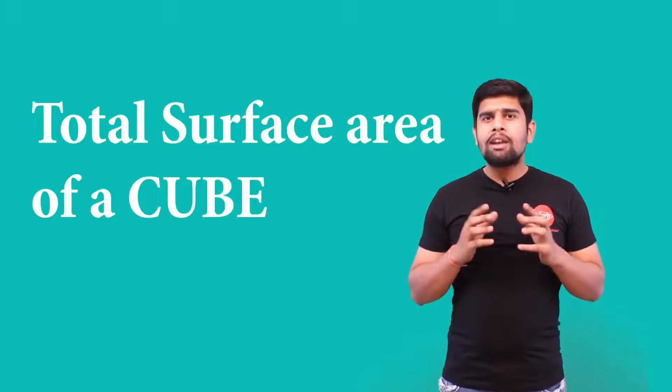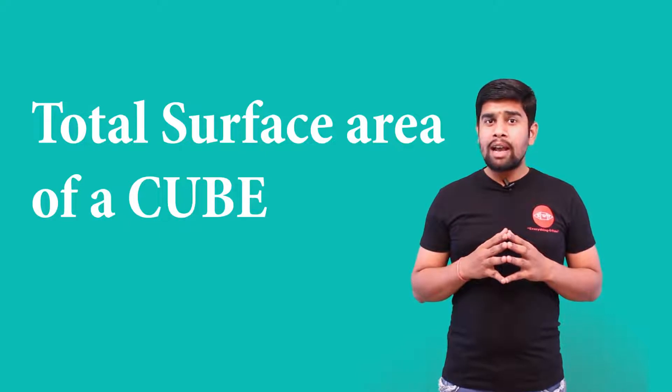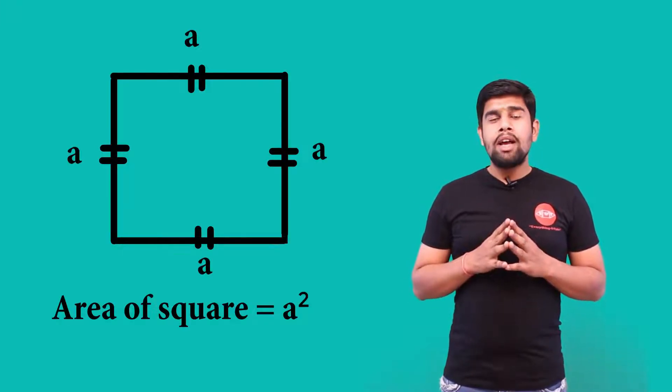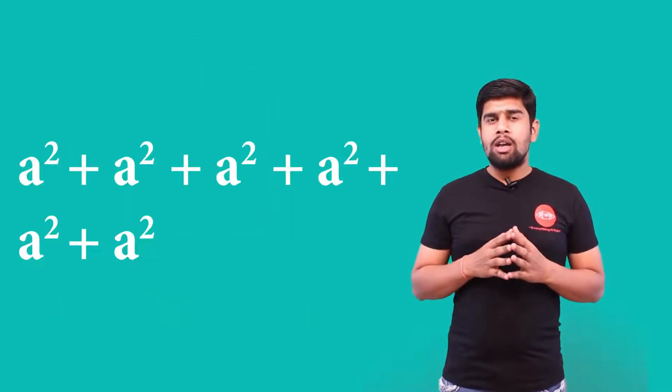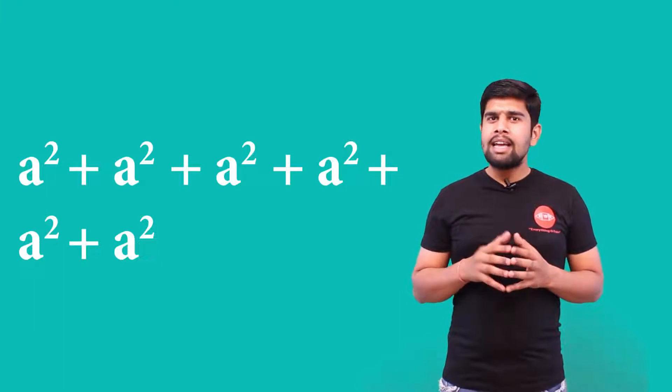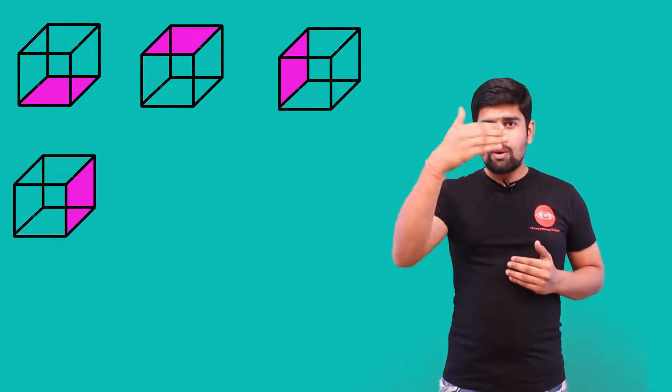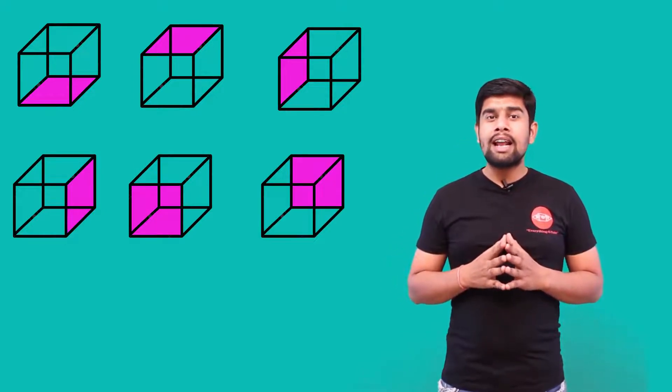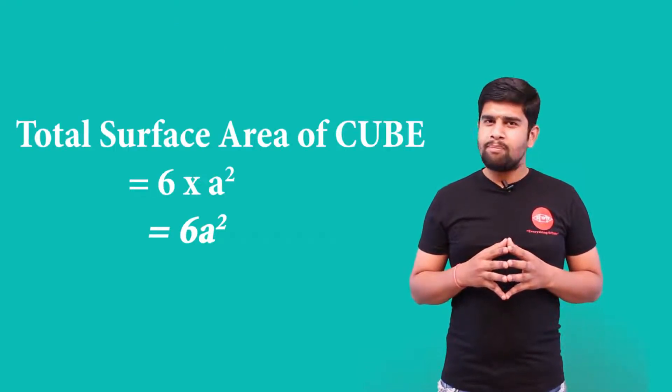To find the total surface area of the cube, you add the areas of all surfaces. Each face has area a squared, and there are six such faces — bottom, top, first side, second side, front, and back. Therefore, the total surface area of the cube is 6a².